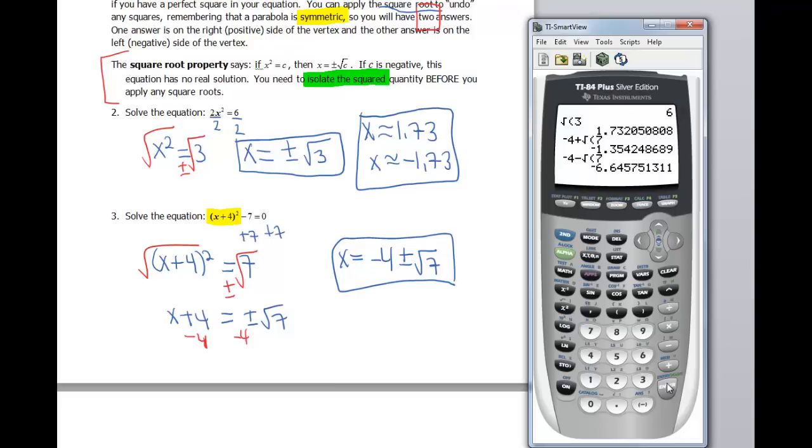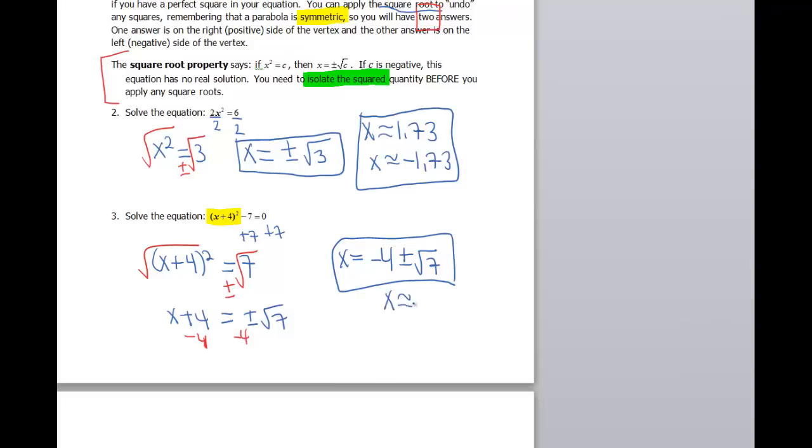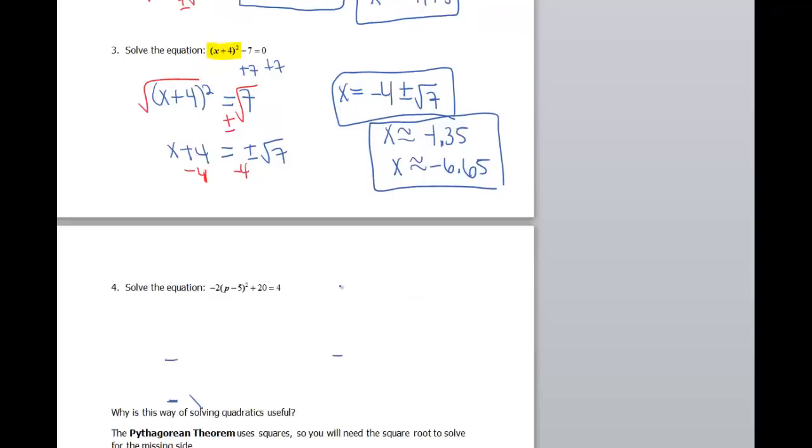So my approximate values then are negative 1.35 and negative 6.65. So those would be my two answers then in approximate value. Again, it doesn't matter which way you want to write them. It just depends on if you like exact values with ugliness or if you want decimals, which is a different kind of ugliness.